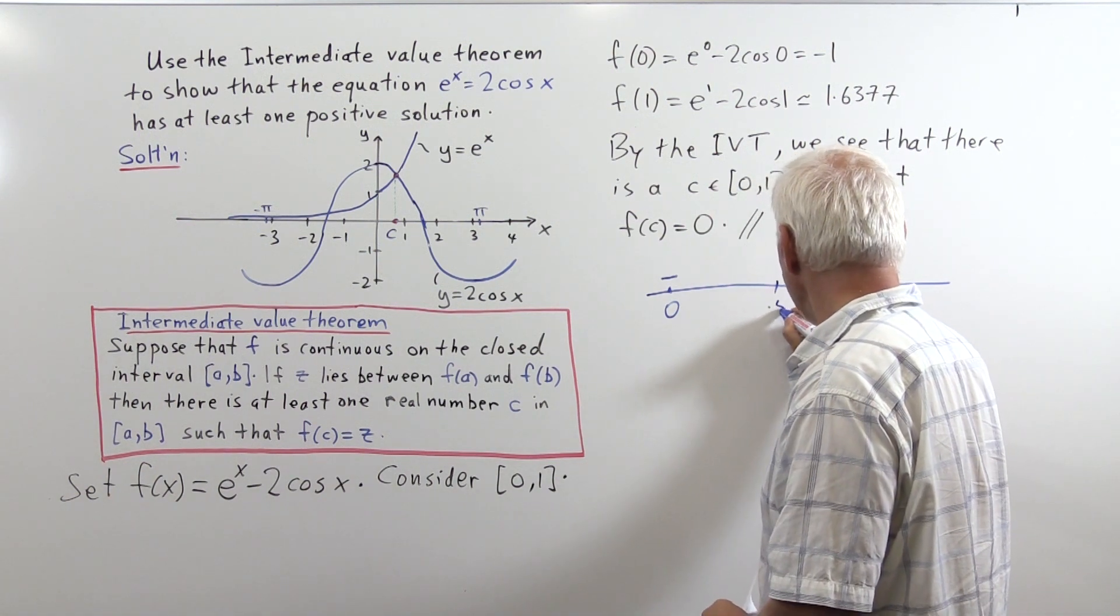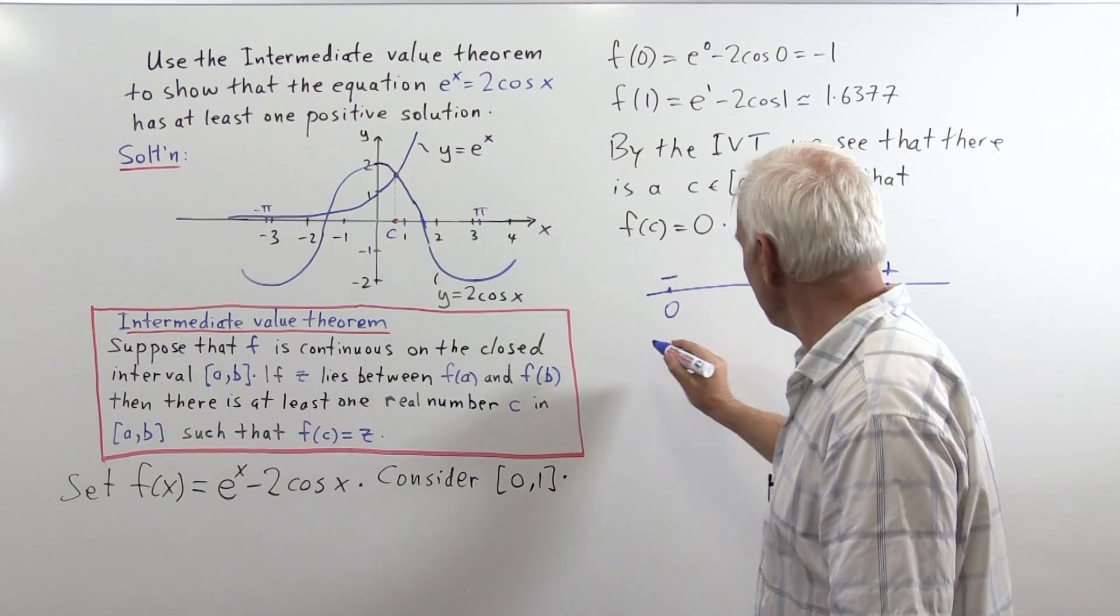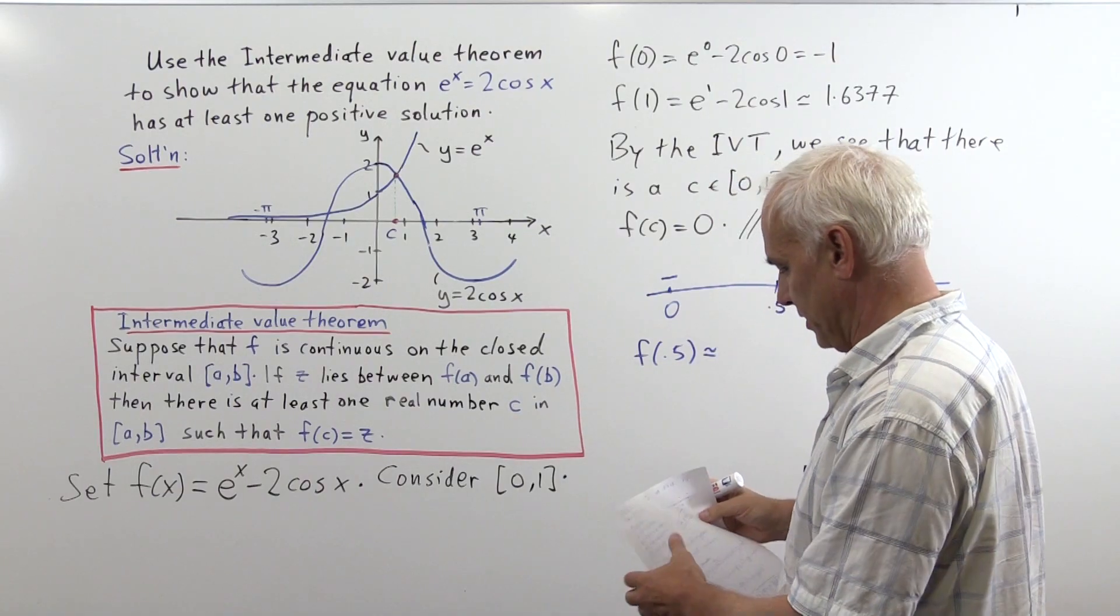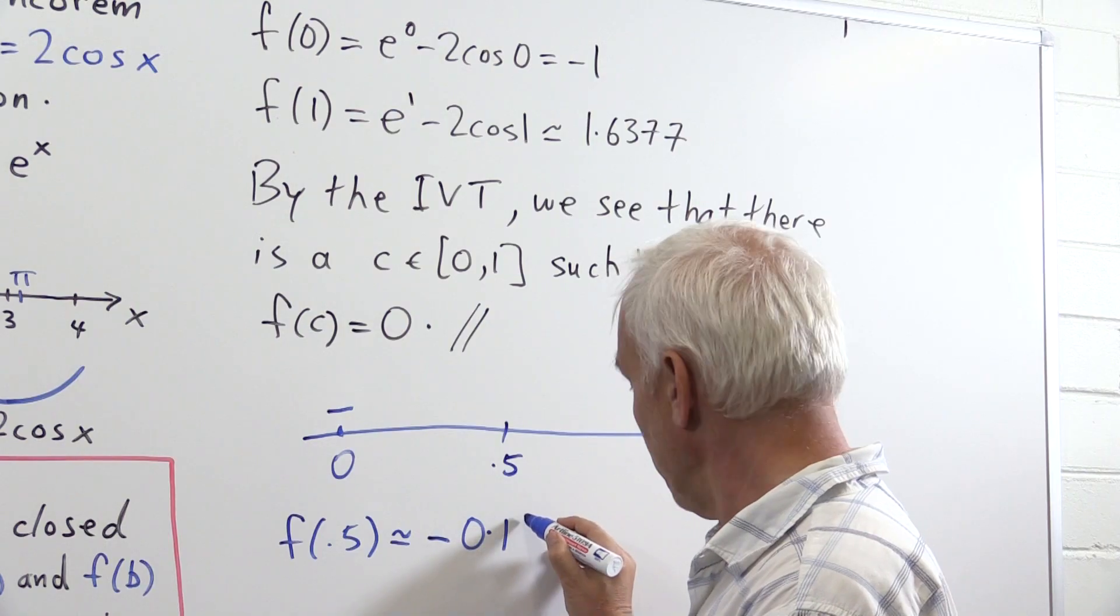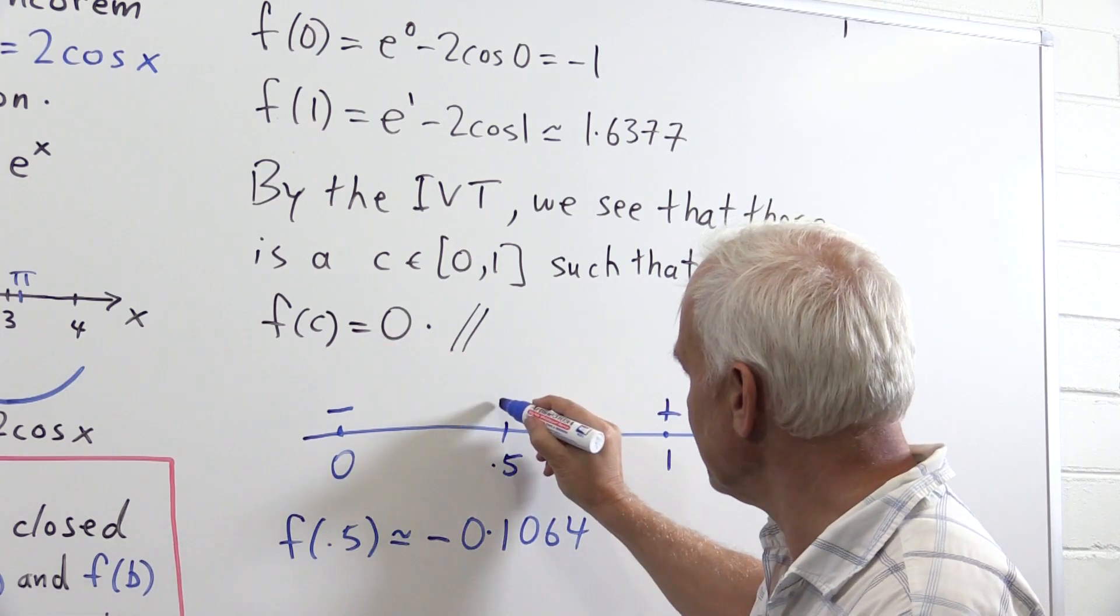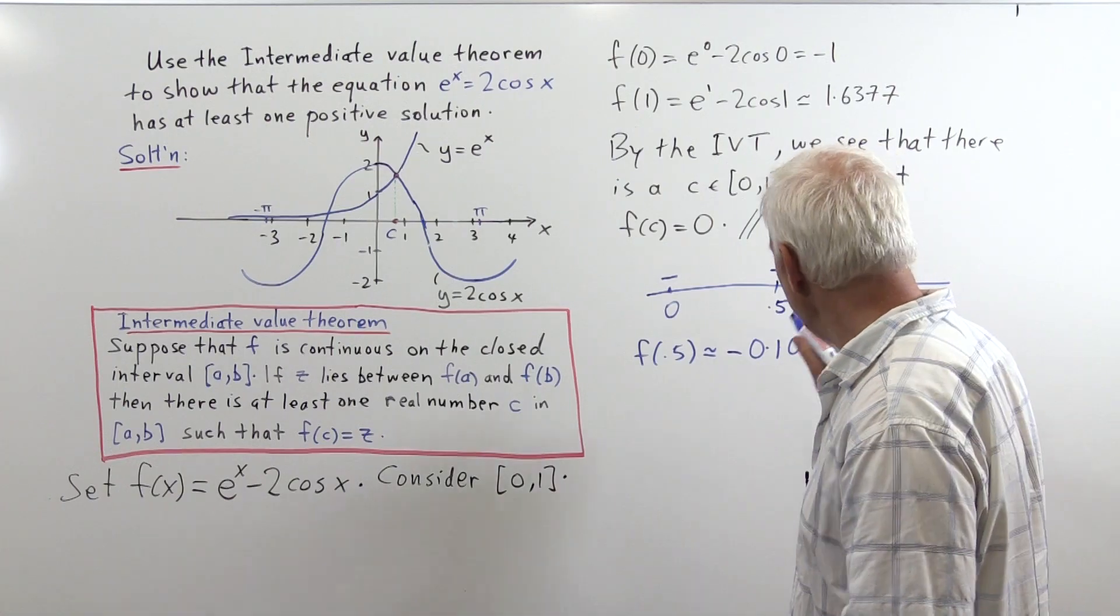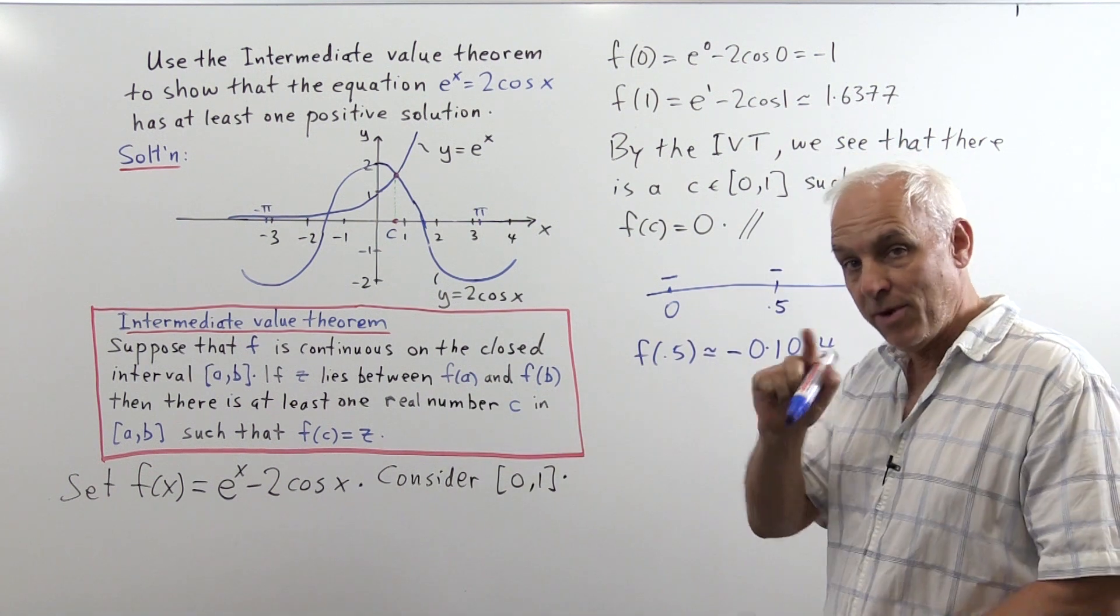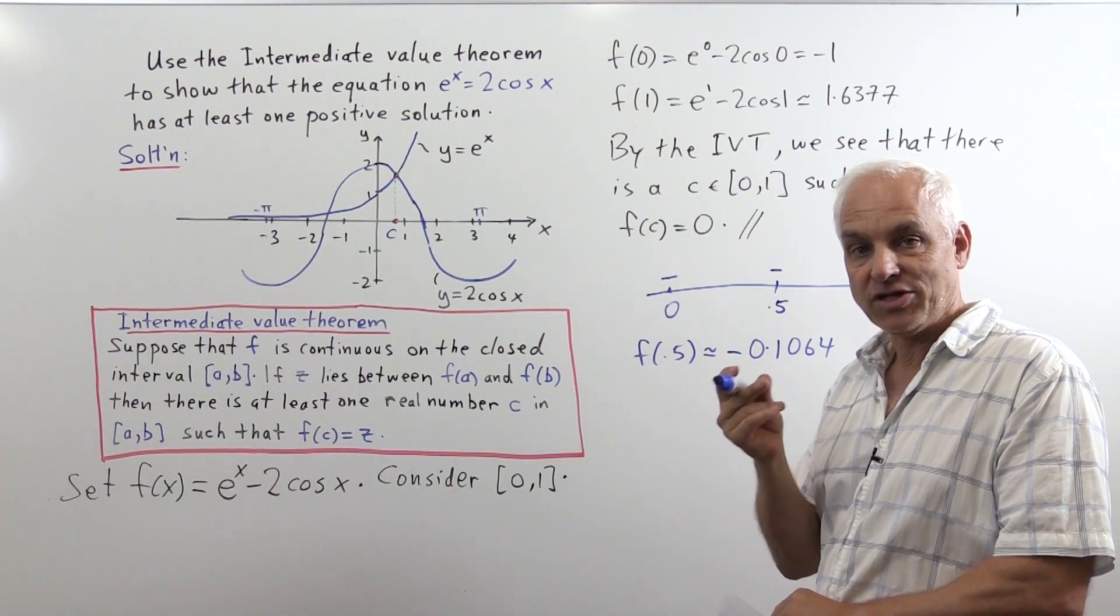Stevin's idea was to divide the interval into 2. There's the midpoint, 0.5. If we calculate the function's value at 0.5, we get approximately -0.1064. So this function f has a negative value at 0.5. Now we know the function is negative at this point and positive at 1, so there must be a value somewhere in this smaller interval where the function's 0.